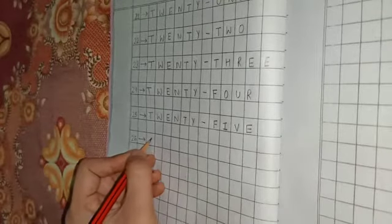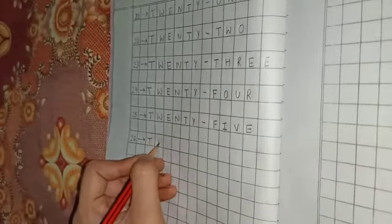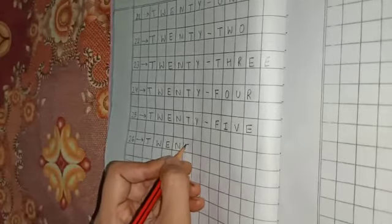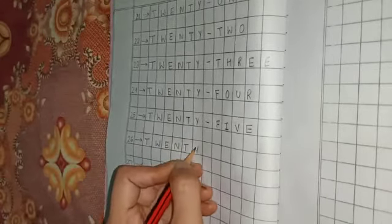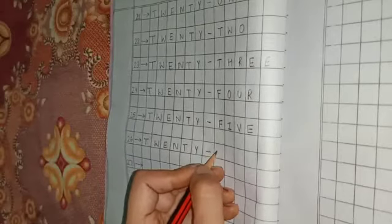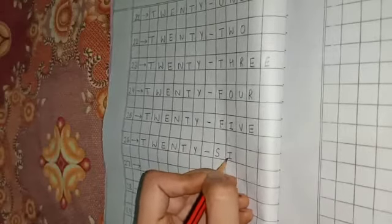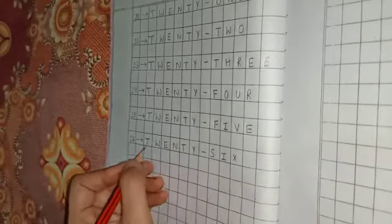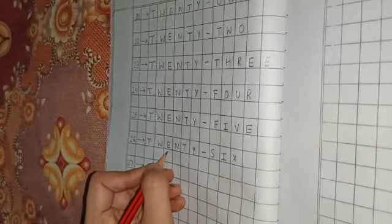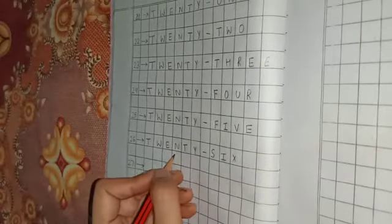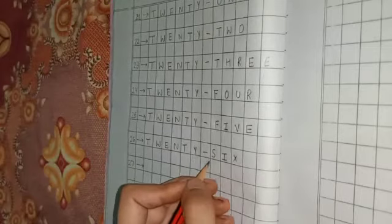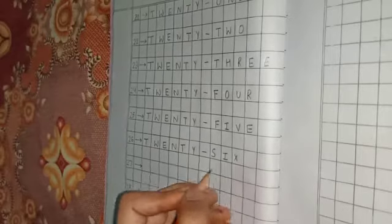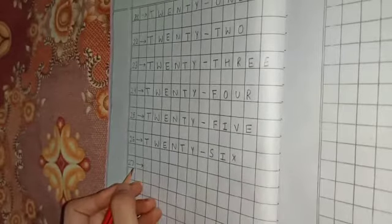Next is 26. T-W-E-N-T-Y, that's 20. S-I-X, that's 6. Twenty-six, 26.